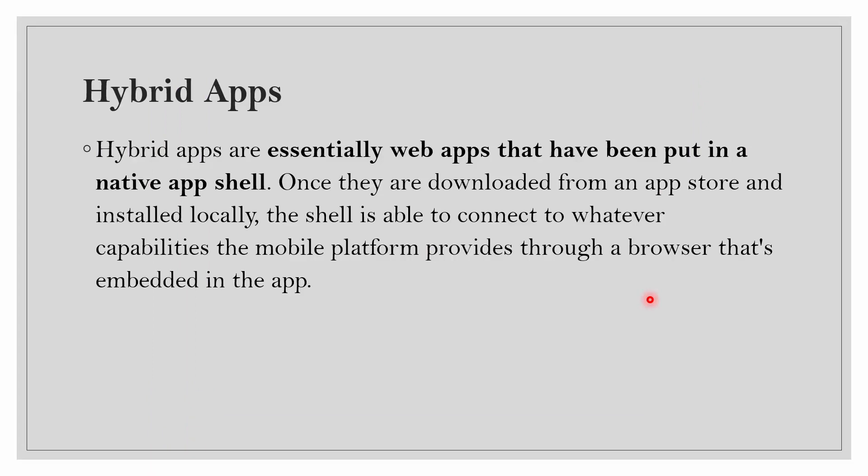Hybrid apps look and feel like native apps — they may have a home screen icon, responsive design, fast performance, and can even be available offline, but they are really web applications that look native. Hybrid apps are essentially web apps put into a native app shell. Once downloaded from an app store and installed locally, the shell connects to the mobile platform's capabilities through a browser embedded in the app.